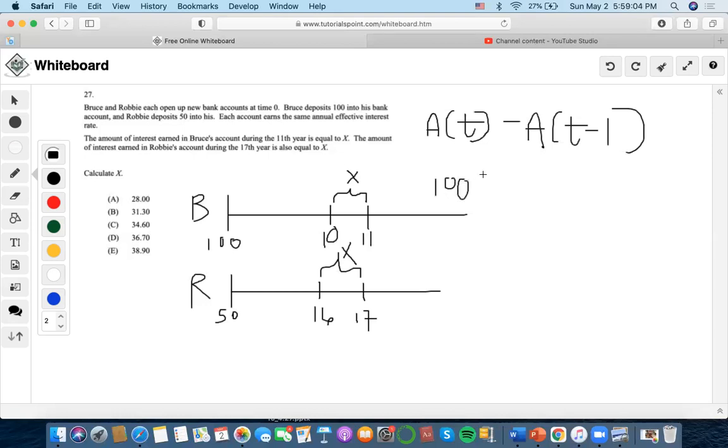at time 11, the value would equal 100(1+i)^11. And at time 10, the value would equal 100(1+i)^10. Let's factor out 100 and simplify.